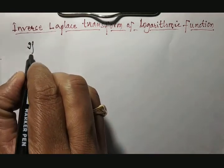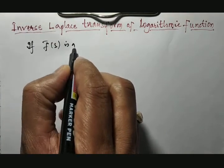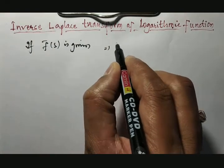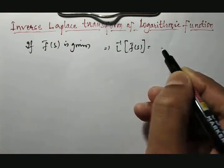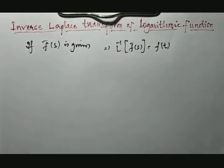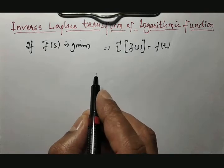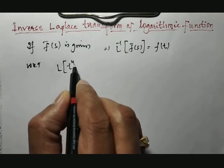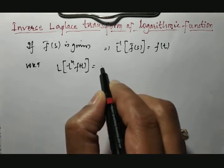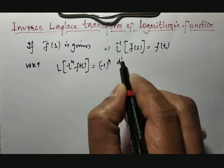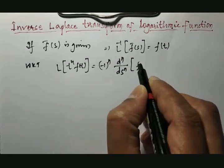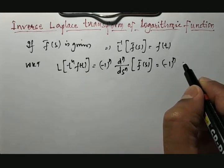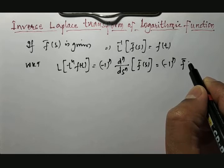If f̄(s) is given and we apply the inverse Laplace on it, it is a known concept that it will be equal to f(t). If you recall, we have a derivative property. It states: if we are finding the Laplace transform of t^n · f(t), it will be equal to (-1)^n · d^n/ds^n · f̄(s), or equivalently (-1)^n times the nth derivative of f̄(s).